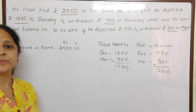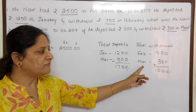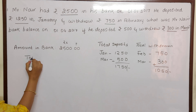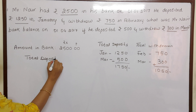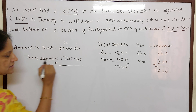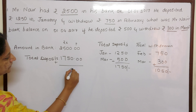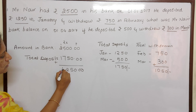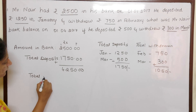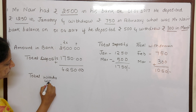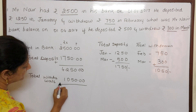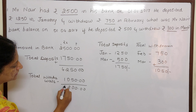Deposits are always to be added because they increase the amount, and withdrawals have to be subtracted because the money from the bank is going out. So we add total deposits of Rs. 1,750 to get Rs. 4,250. Now we subtract total withdrawals of Rs. 1,050. And then our answer will be Rs. 3,200.